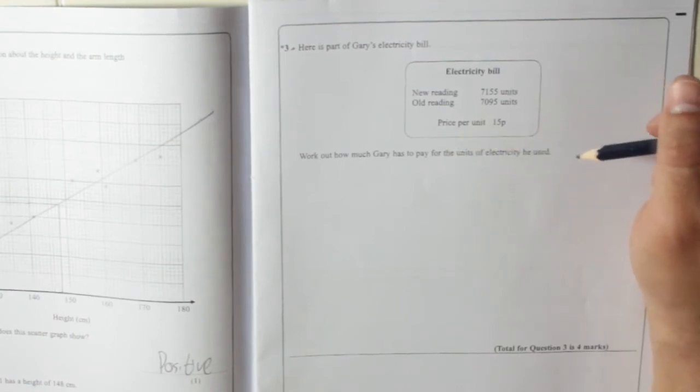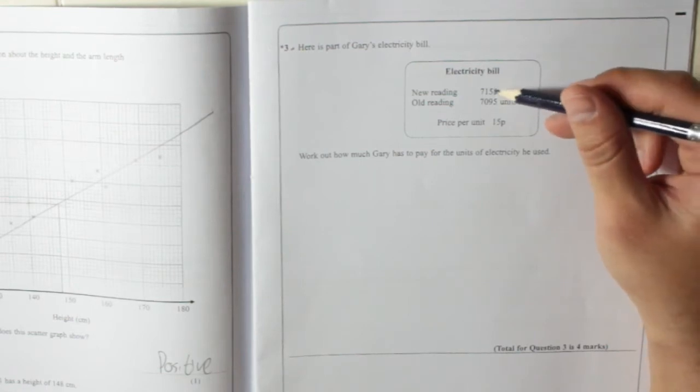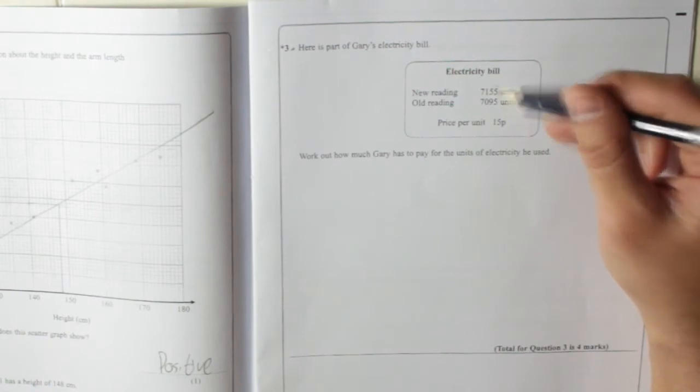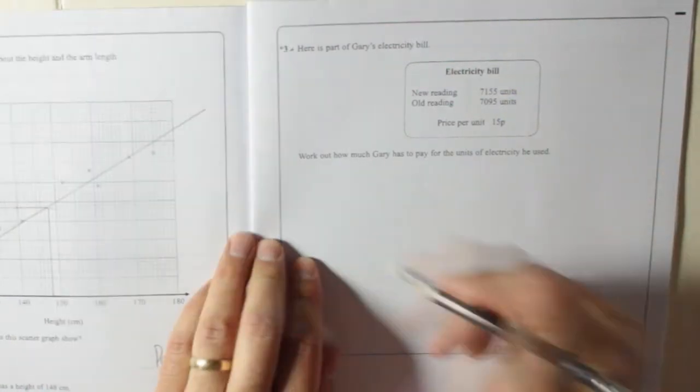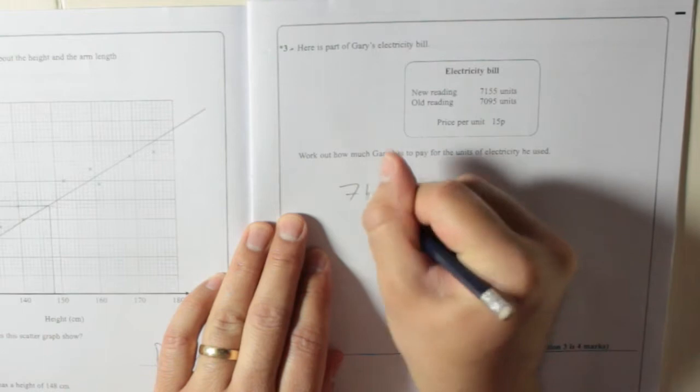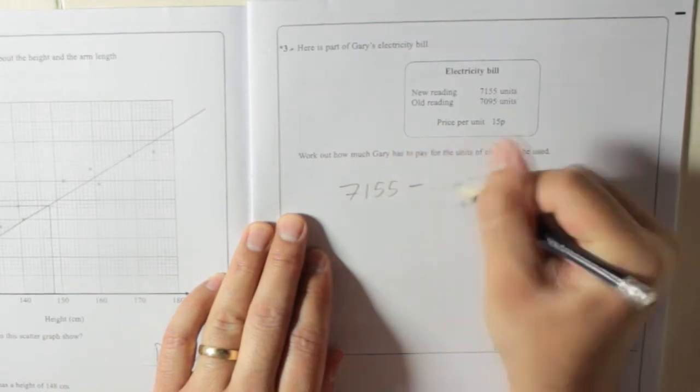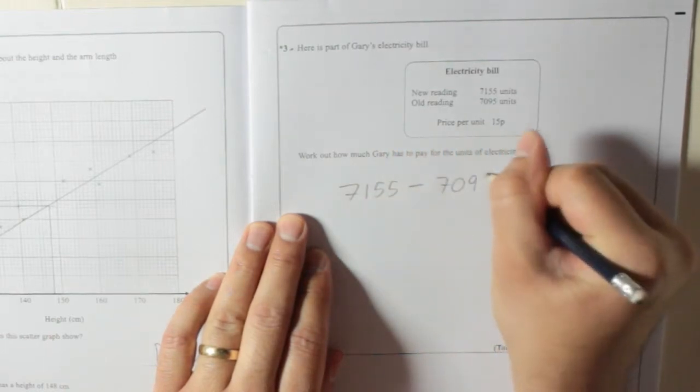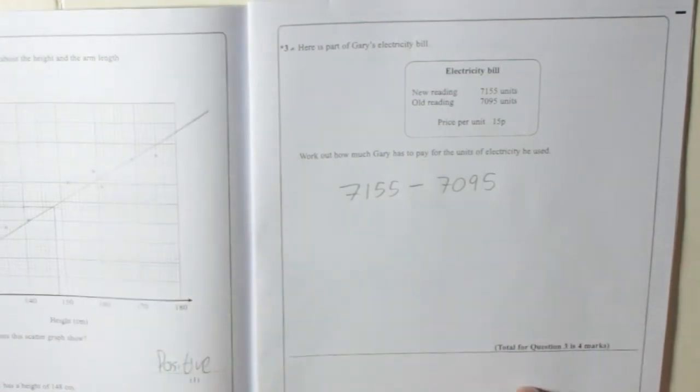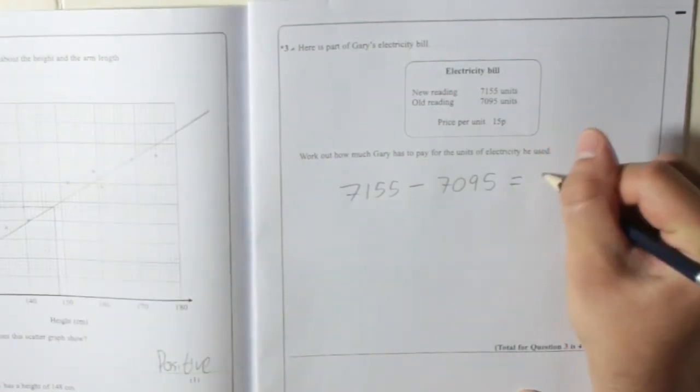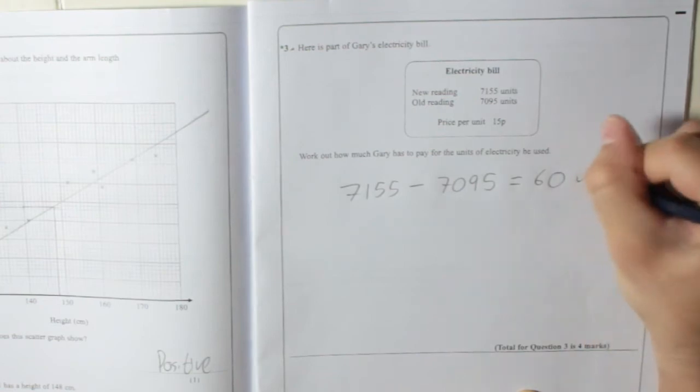Now, he didn't use all of those units. He used the difference between the last reading and the new reading. So first of all, you need to find out the difference between those numbers. You do 7155 take away 7095, and that would be 60. That's how many units he used.